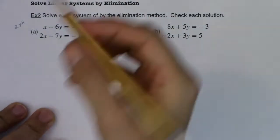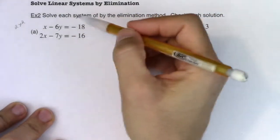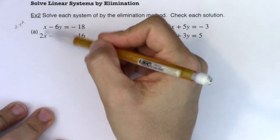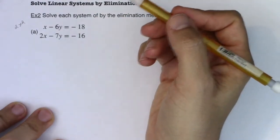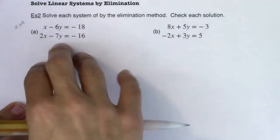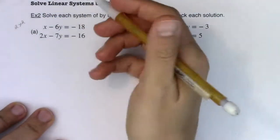Alright so what elimination involves doing is literally eliminating one of your variables by multiplying one or both equations by a constant. So here's for instance. Now again what I'm about to do is not unique to this problem. There are multiple ways of doing this.